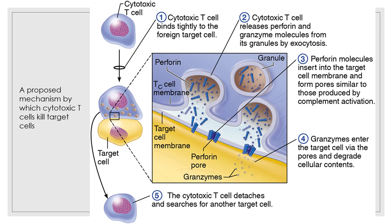Cytotoxic T cells specialize in killing virus-infected, cancer, or foreign graft cells directly. First, they bind tightly to a foreign cell. Second, they release toxic chemicals — perforin and granzymes — from their granules. The glycoprotein perforin then enters the foreign cell's plasma membrane, delivering the 'lethal hit.' Shortly thereafter, pores appear in the target cell's membrane, allowing granzymes — the protein-digesting enzymes — to enter and kill the foreign cell. The cytotoxic T cell then detaches and seeks other foreign prey to attack.